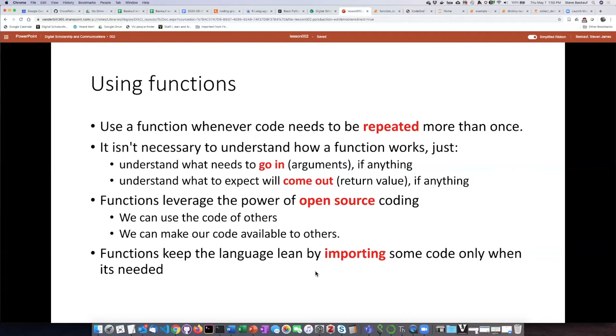Functions also keep the language lean by not providing every possible capability. By now, Python and R have so much code written that if the language itself included all of that reusable code, they would be too big even to load. So it was a conscious decision to not try to put everything into these languages, but rather to only put the basic parts in and then allow users to import the additional parts that they need. If you've ever waited for something like ArcGIS or Photoshop to load, it takes a long time because all of the functionality has to get loaded at once. And you'll notice that Python and R load relatively quickly for that reason.